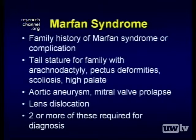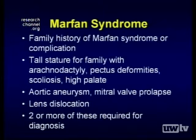People are often tall for their families, have arachnodactyly — which means long, thin fingers and long, thin feet — pectus deformities such as pectus carinatum, which is a pigeon-shaped chest, or pectus excavatum, which is a scooped-out chest, scoliosis, and a high-arched palate. Other very important diagnostic features include an aortic aneurysm, and mitral valve prolapse is usually part of that. Lens dislocation is extremely important because it's very rare in the general population, and about 70% to 80% of people with Marfan syndrome have lens dislocation. In order to make the diagnosis, we usually require that two or more of these features are present in the individual.